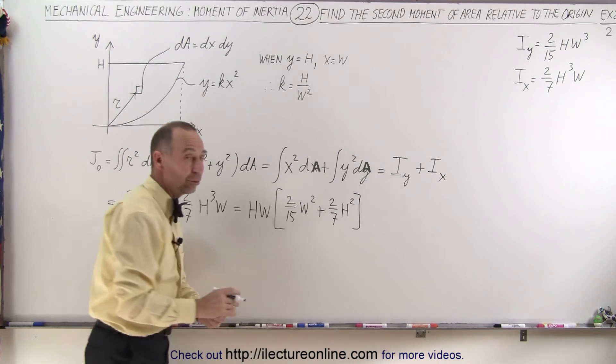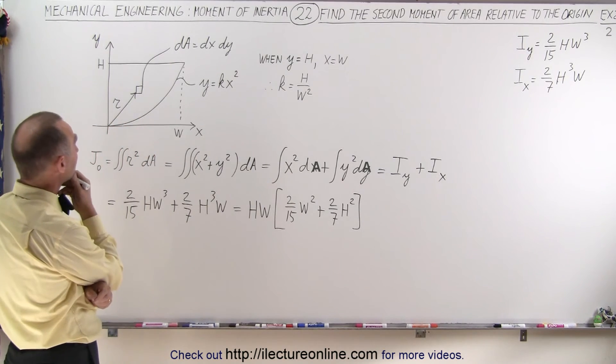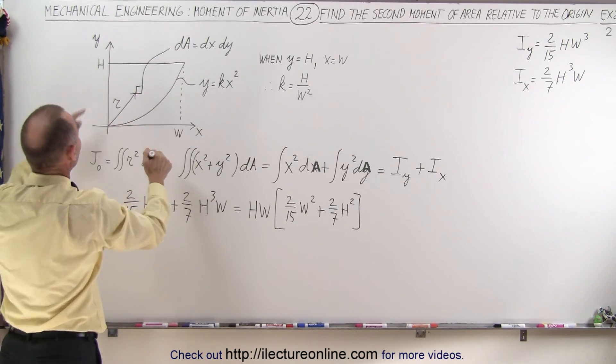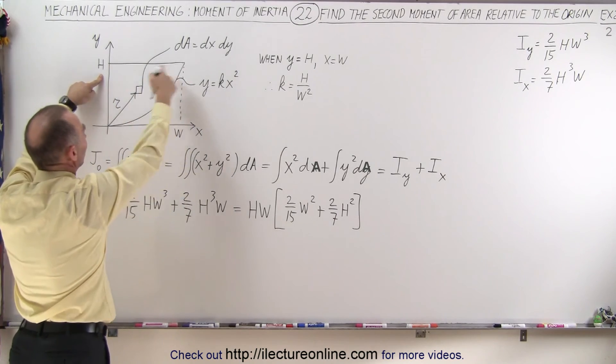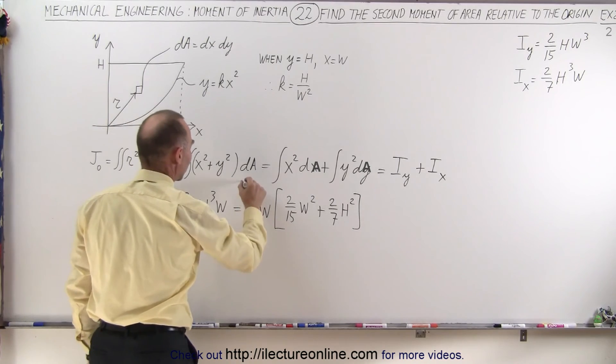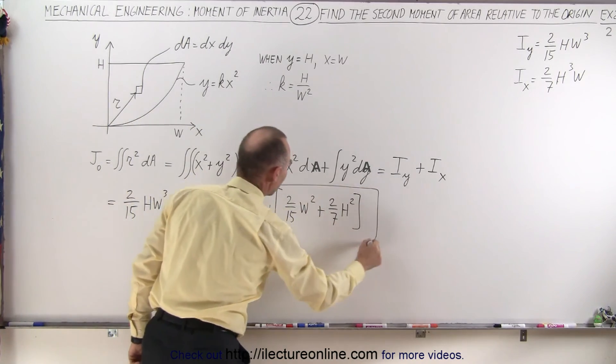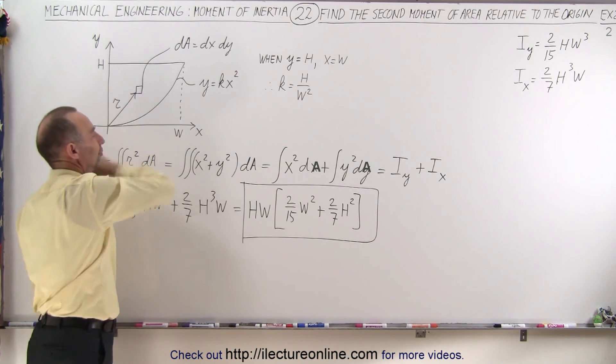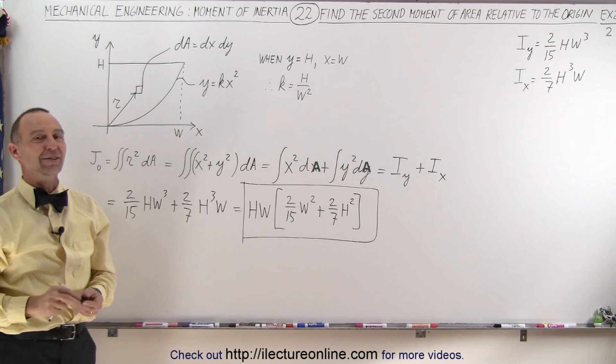And of course, since h times w is equal to the area, well, not really. I thought it was going to be equal to the area there, but it's not. h times w is simply this complete area there, so we can just leave it in that form, and I'll simply say that this here is the second moment of area of this particular area relative to the origin. And that's how it's done.